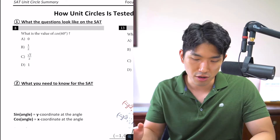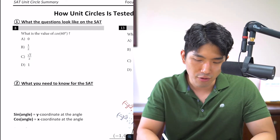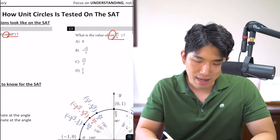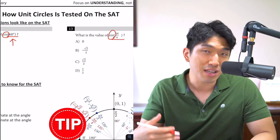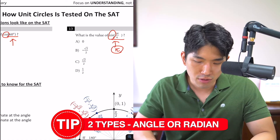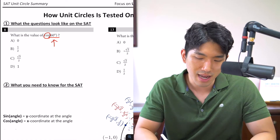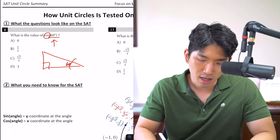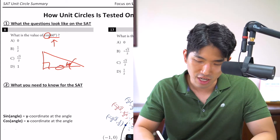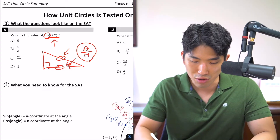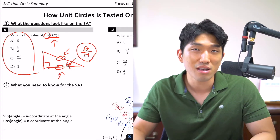The very first thing you need to know: unit circle questions look like this on the SAT — 'What's the value of cosine of 60?' and 'What's the value of sine of 5π over 4?' What most students end up doing is thinking it must be SOH-CAH-TOA, so they try to draw a right triangle with 60 in there and say cosine is adjacent over hypotenuse. But that doesn't give them the answer because we don't know what the side lengths are, so they end up guessing and getting the question wrong.